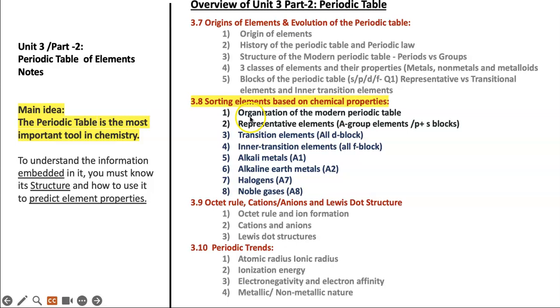Then we are going to look at representative elements, transition elements, inner transition elements, alkali metals, alkaline earth metals, halogens, and noble gases, and look at their chemical and physical properties. The main idea is that the periodic table is the most important tool in chemistry, and we are learning about the structure and properties of elements and their valence electron numbers that are embedded within the periodic table.